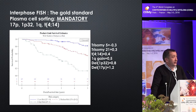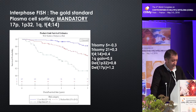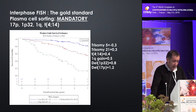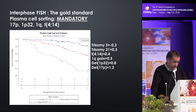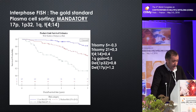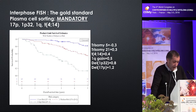We analyzed quite a large number of patients for training and then for confirmation. Using SNP array, we are able to look at all the chromosomal abnormalities, and we came up with six abnormalities. One is associated with good prognosis, which is trisomy 5, and all the others are associated with poor outcome: trisomy 21, t(4;14), 1q gain, deletion 1p, and deletion 17p. So we did propose an algorithm.